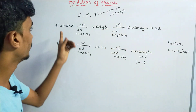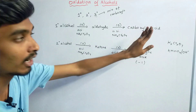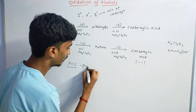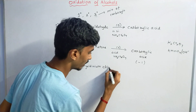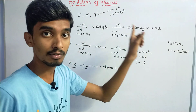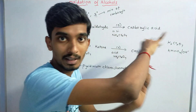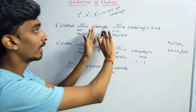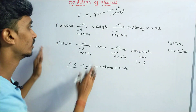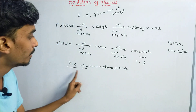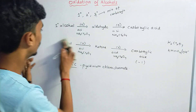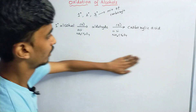An important reaction is converting primary alcohol only to aldehyde without going further to carboxylic acid. For this, you must use the reagent PCC — pyridinium chlorochromate. With PCC, primary alcohol stops at aldehyde and does not form carboxylic acid. Similarly, secondary alcohol gives ketone and ketone does not get further converted to carboxylic acid. So if you want to stop at aldehyde or ketone, use PCC — pyridinium chlorochromate.